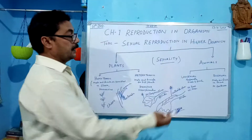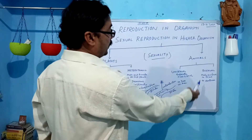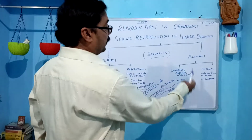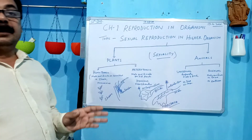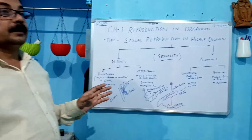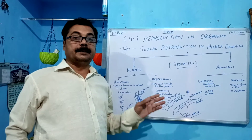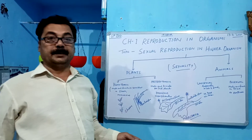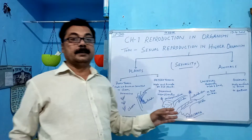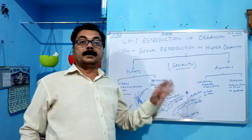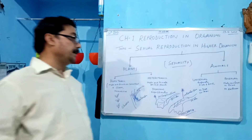Now, another thing in animal cases: there are two types of breeders, that is seasonal breeders and continuous breeders. These are seasonal and continuous breeders, which we will further divide and discuss.